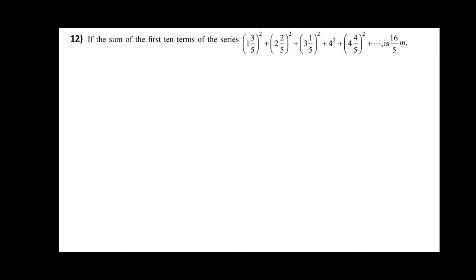Question number 12: If the sum of the first 10 terms of the series (1 3/5)² + (2 2/5)² + (3 1/5)² + 4² + (4 4/5)² + ... is (16/5)m, then m is equal to: option A 102, option B 101, option C 100, option D 99. This question was also already asked in a previous year paper.